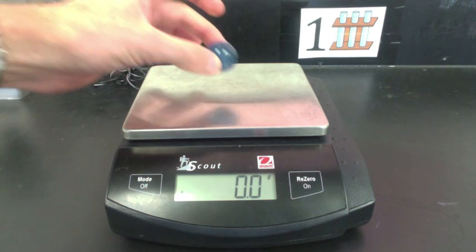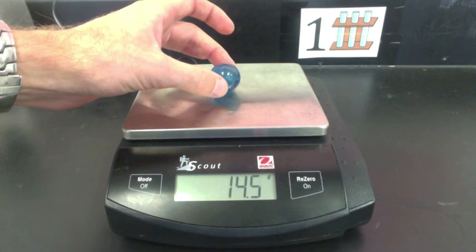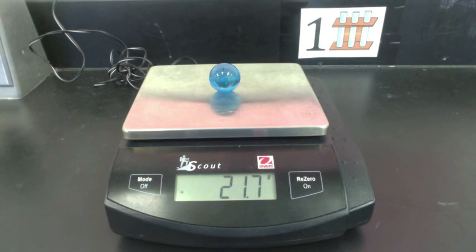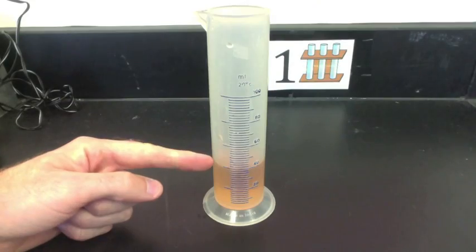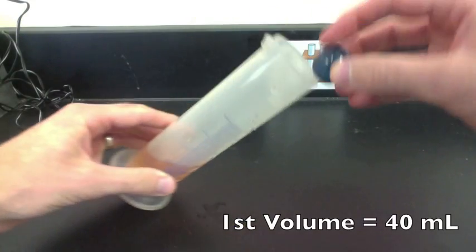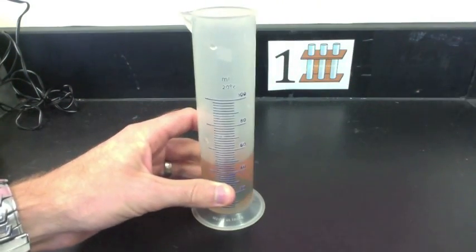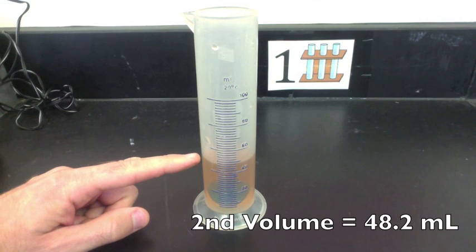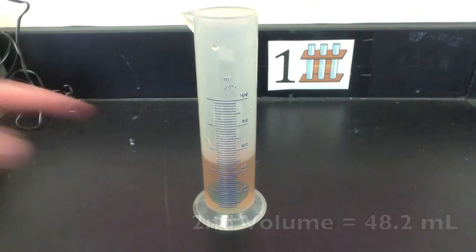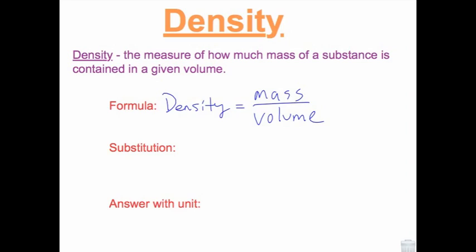Here is the mass of the blue sphere. The first volume is 40 milliliters. When the blue sphere is placed inside, the water level rises to 48.2 milliliters. Now you can calculate the density of the blue sphere.